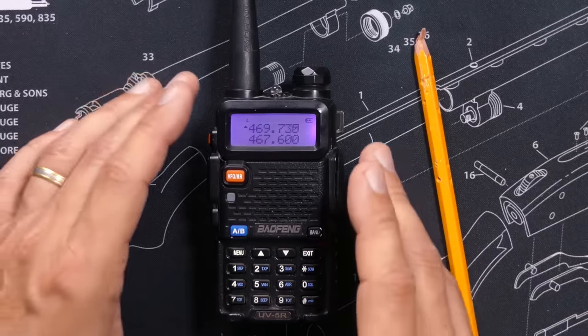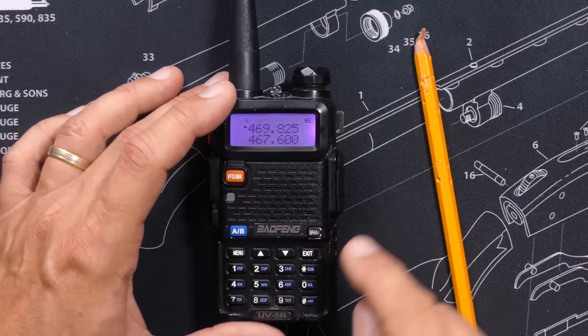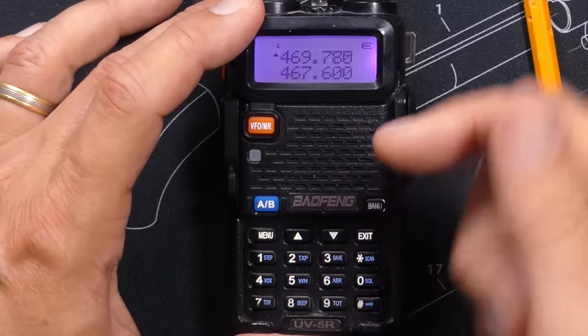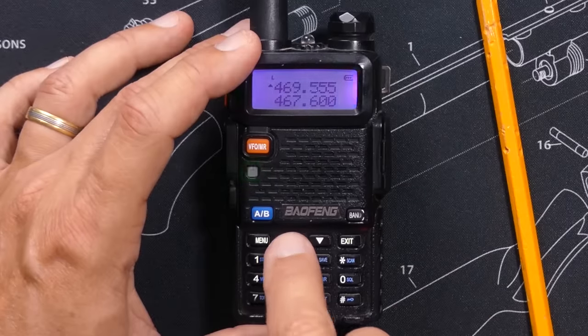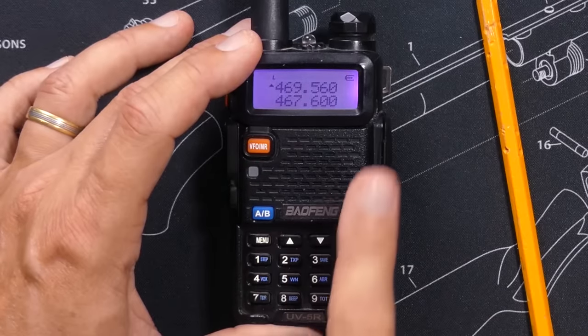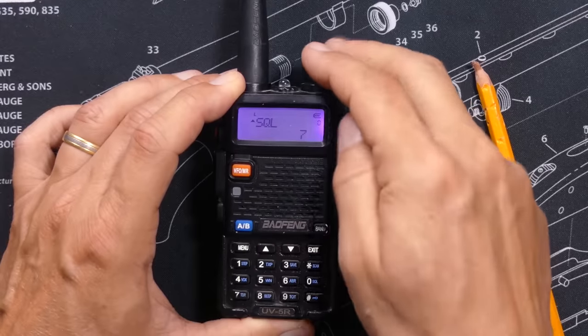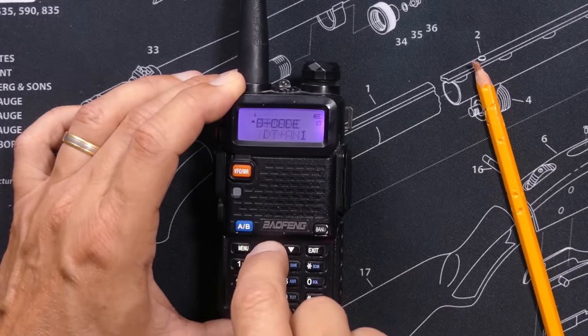If, as the radio is scanning, you thought you heard something but you missed it, you can scan backwards by pressing the down arrow key. The radio will then begin scanning backwards or down in frequency instead of up. You can then press the up arrow key to resume scanning in the upward fashion.